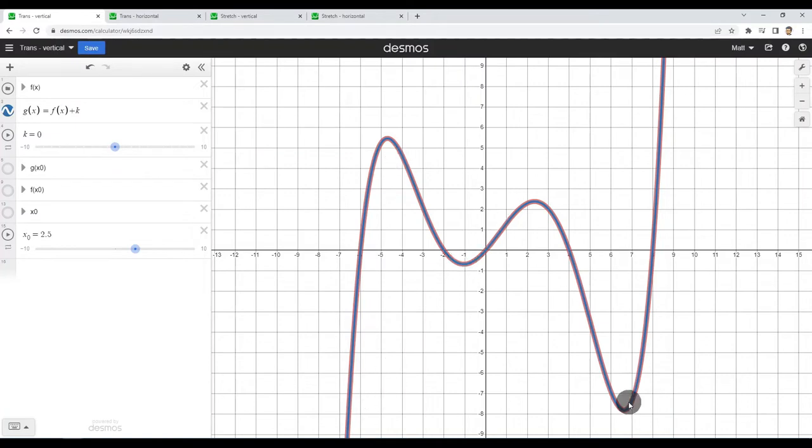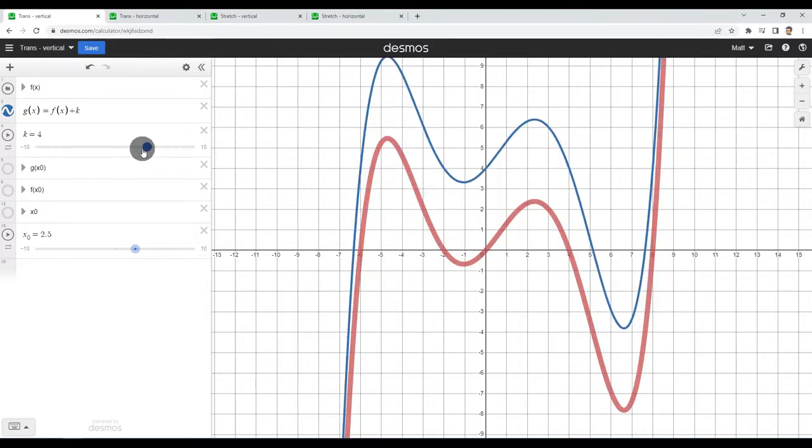G of x is our transformation. If I turn that on it'll be blue. Because I'm adding zero right now it doesn't change it, but if I increase this and add say five it shifts it up. If I add a negative value it shifts it down, which is pretty intuitive.